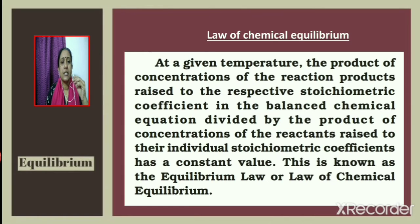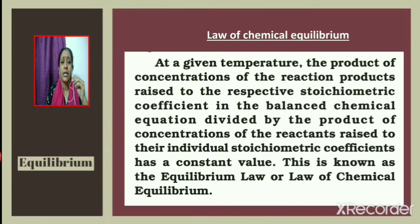The law of chemical equilibrium states: at a given temperature, the product of concentrations of the products raised to their respective stoichiometric coefficients in the balanced equation, divided by the product of concentrations of the reactants raised to their stoichiometric coefficients, has a constant value. This is known as the equilibrium law or law of chemical equilibrium.